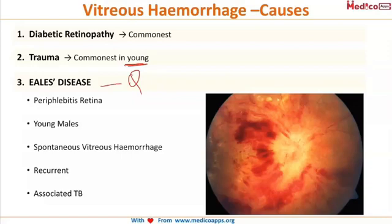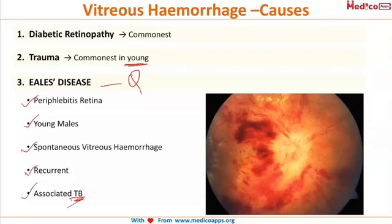Eales disease is a very famous condition that can be asked as an exam question. Its features include perivasculitis of the retina — there is inflammation of the retinal vessels. It characteristically presents in young males with spontaneous vitreous haemorrhage, causing sudden painless loss of vision. It is recurrent — the haemorrhage keeps absorbing and then reoccurring. It is most commonly associated with tuberculosis.